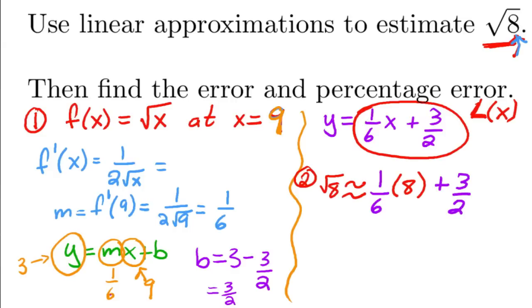which is 17 over 6, or also 2.83333333. Okay, so that's your approximation. Now, to find the error, we need to find the actual value.